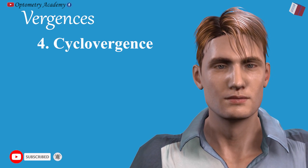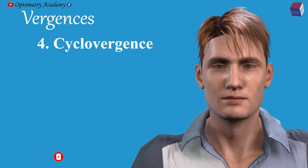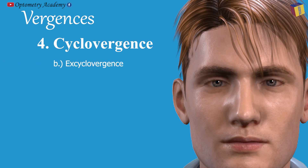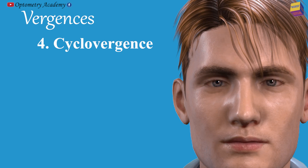Cyclovergence is the disjugate torsional movement in which the vertical meridian of the two eyes moves in opposite directions. Incyclovergence is a torsional disjugate movement in which the upper end of the vertical meridian in each eye tilts towards the nose. Excyclovergence is opposite to incyclovergence — the upper end of the vertical meridian in each eye tilts away from the nose. Cyclovergences are involuntary movements stimulated by retinal image disparity due to cyclophoria, and thus occur to compensate for cyclophoria in the interest of fusion.